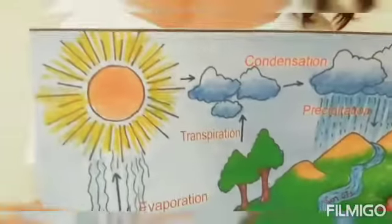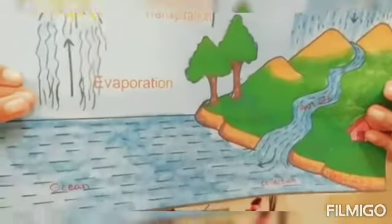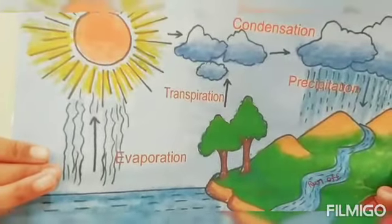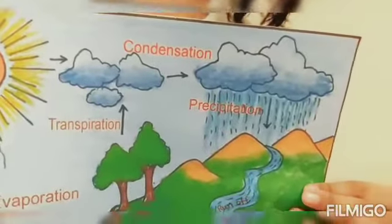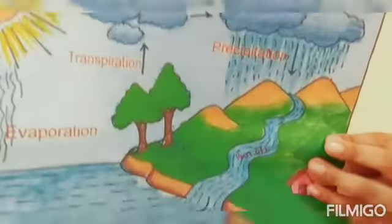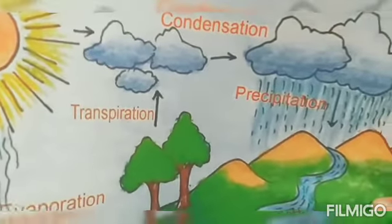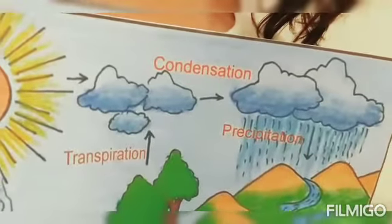So basically what is happening in nature is that the hot sun, due to its heat, evaporates the water from lakes, rivers, seas and oceans. The steam rises up in the sky in the form of water vapor to form clouds. Plants and trees also give out moisture in the air — this is called transpiration.